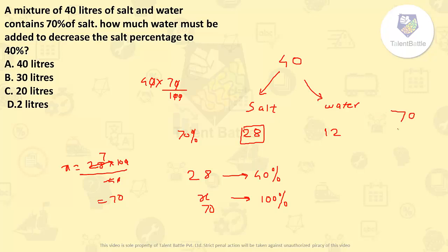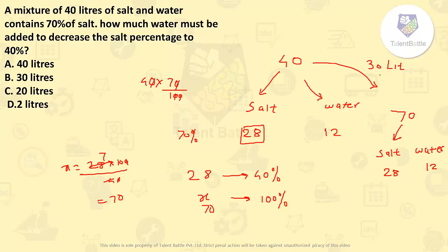New quantity of mixture is 70 liters; out of that, salt is 28 liters. Initially the mixture was 40 liters, so to make it 70 I need to add 30 liters of water. Water will become 42 liters total. The answer for this question is 30 liters. After adding 30 liters of water, salt will become 40% in the mixture.